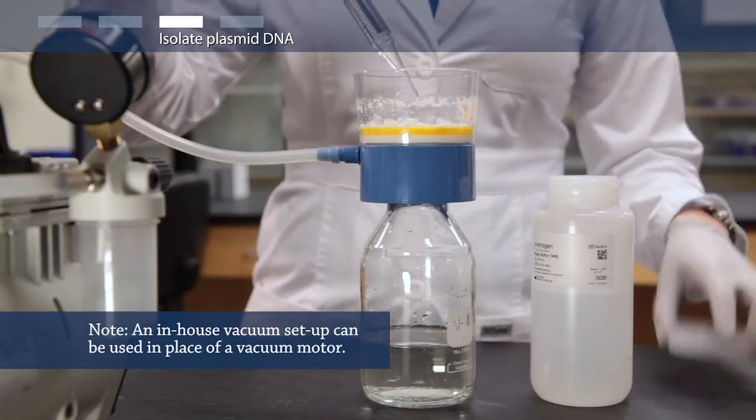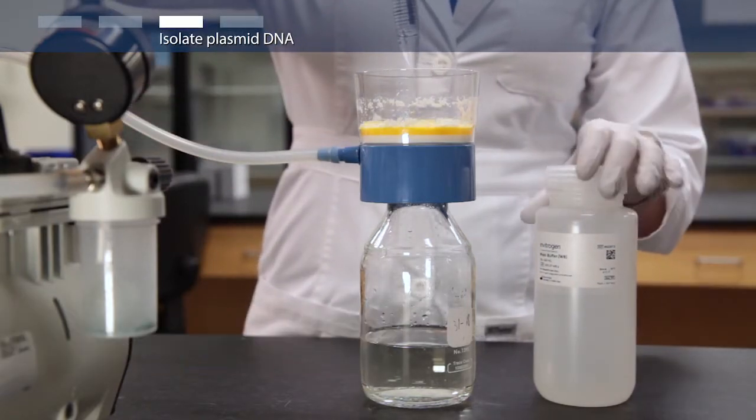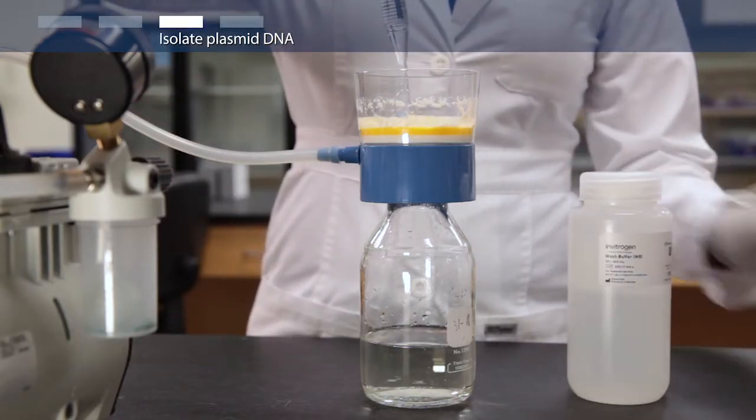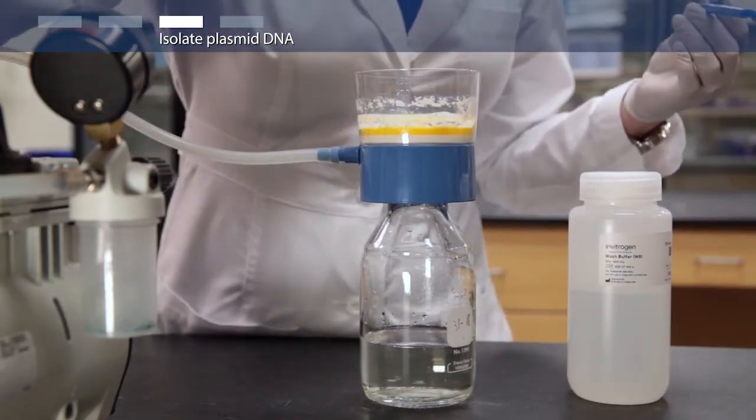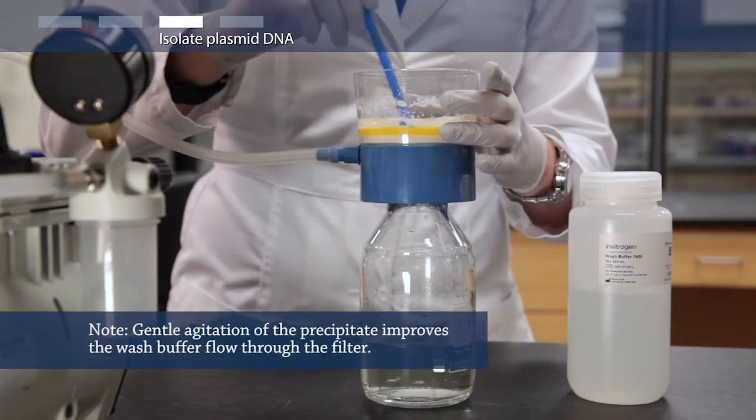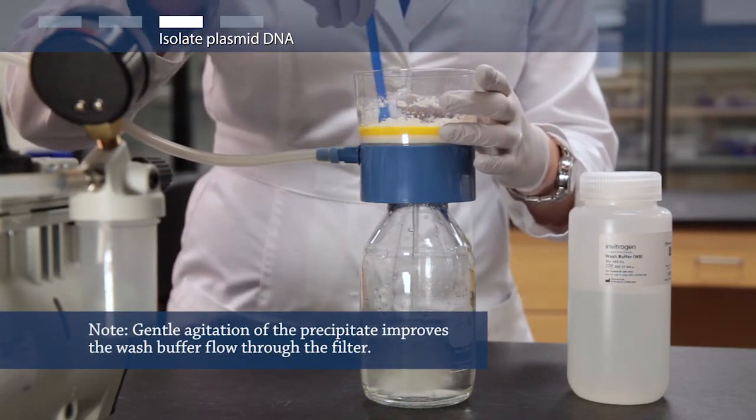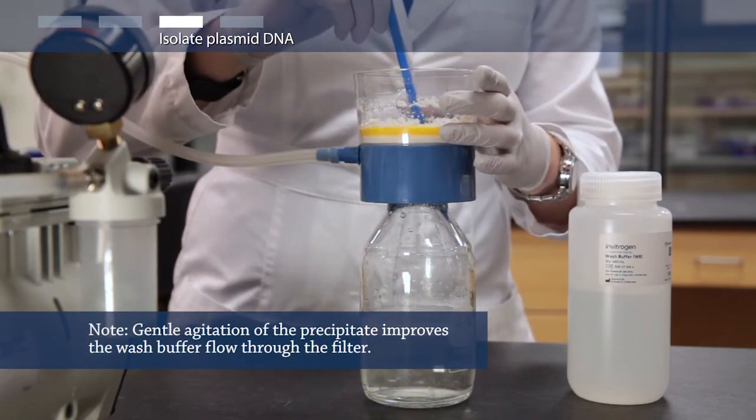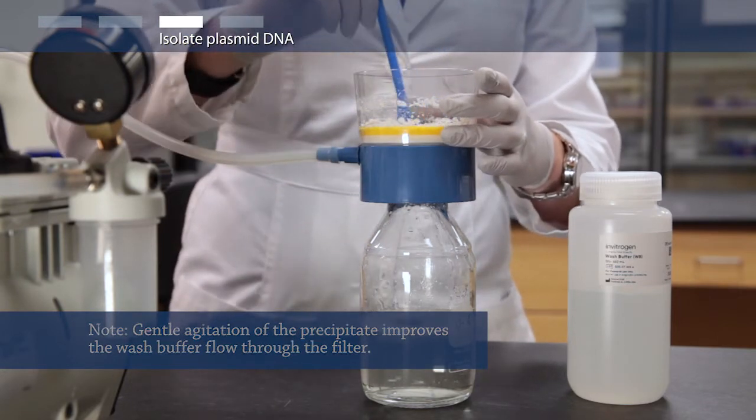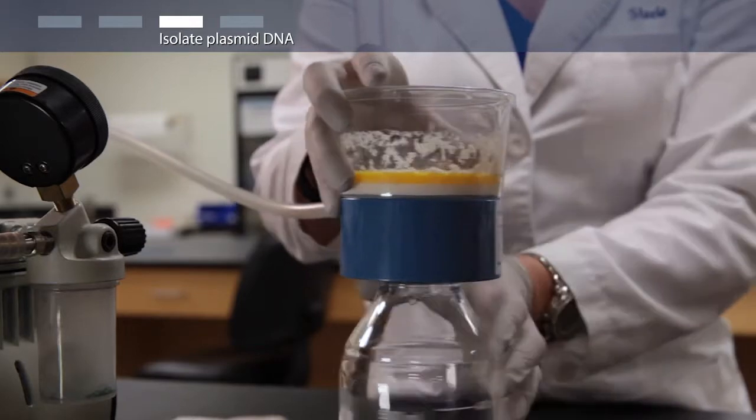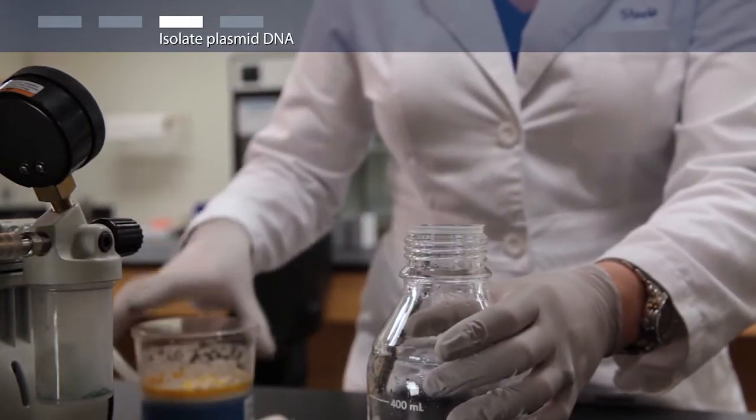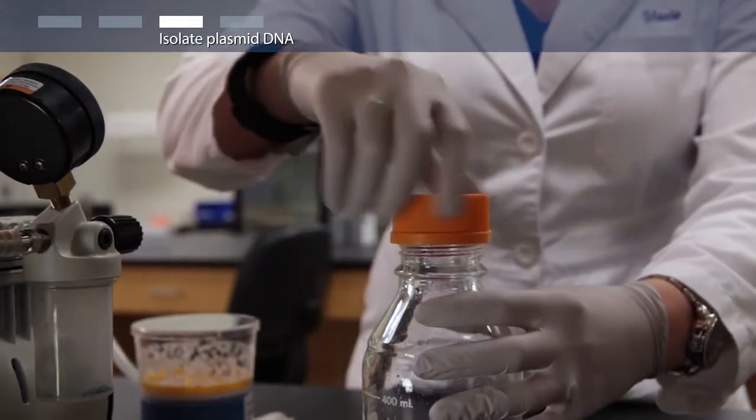Add 50 milliliters of wash buffer and gently stir the precipitate with a spatula while turning on the vacuum. The clarified lysate contains the plasmid DNA. Discard the filtration cartridge.